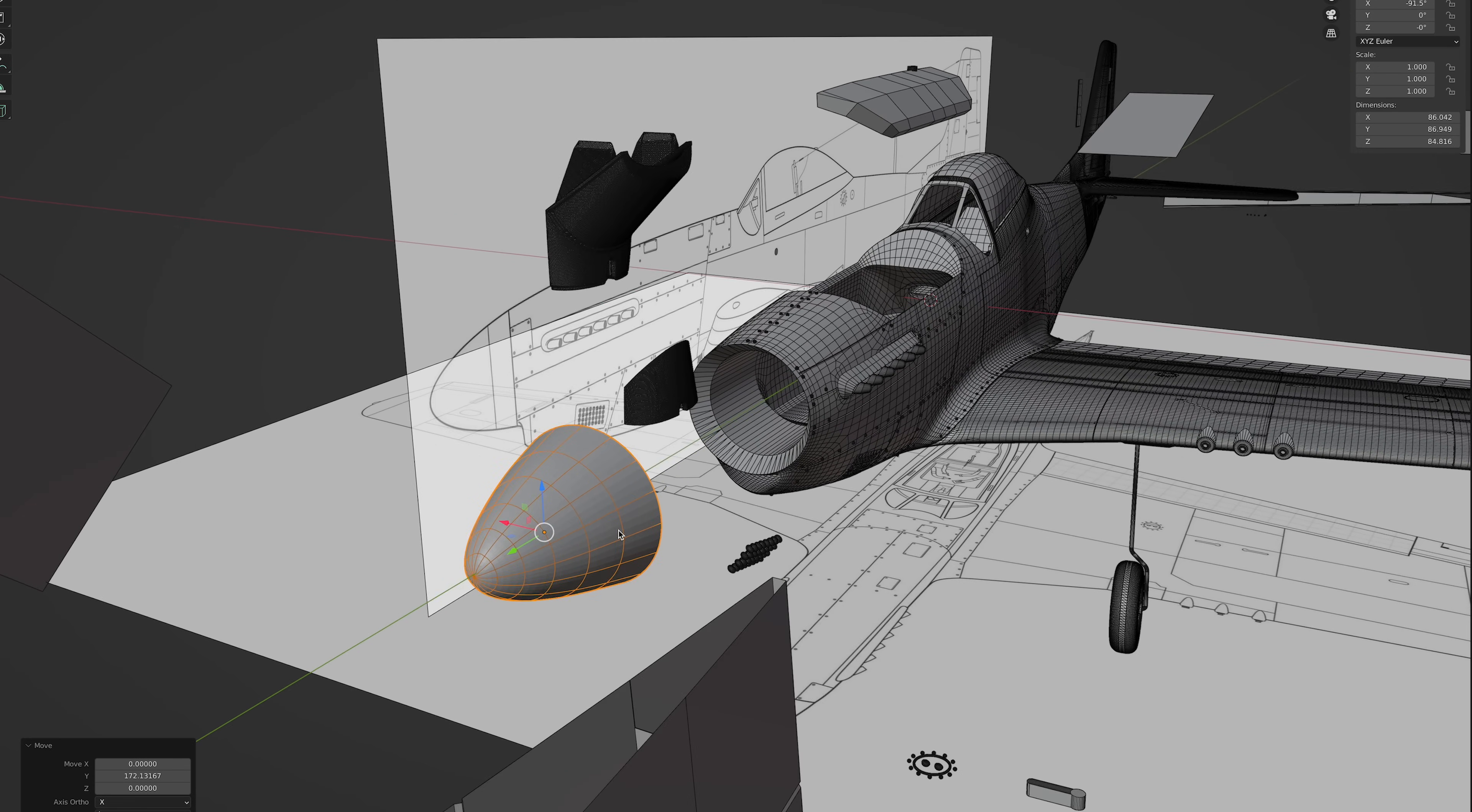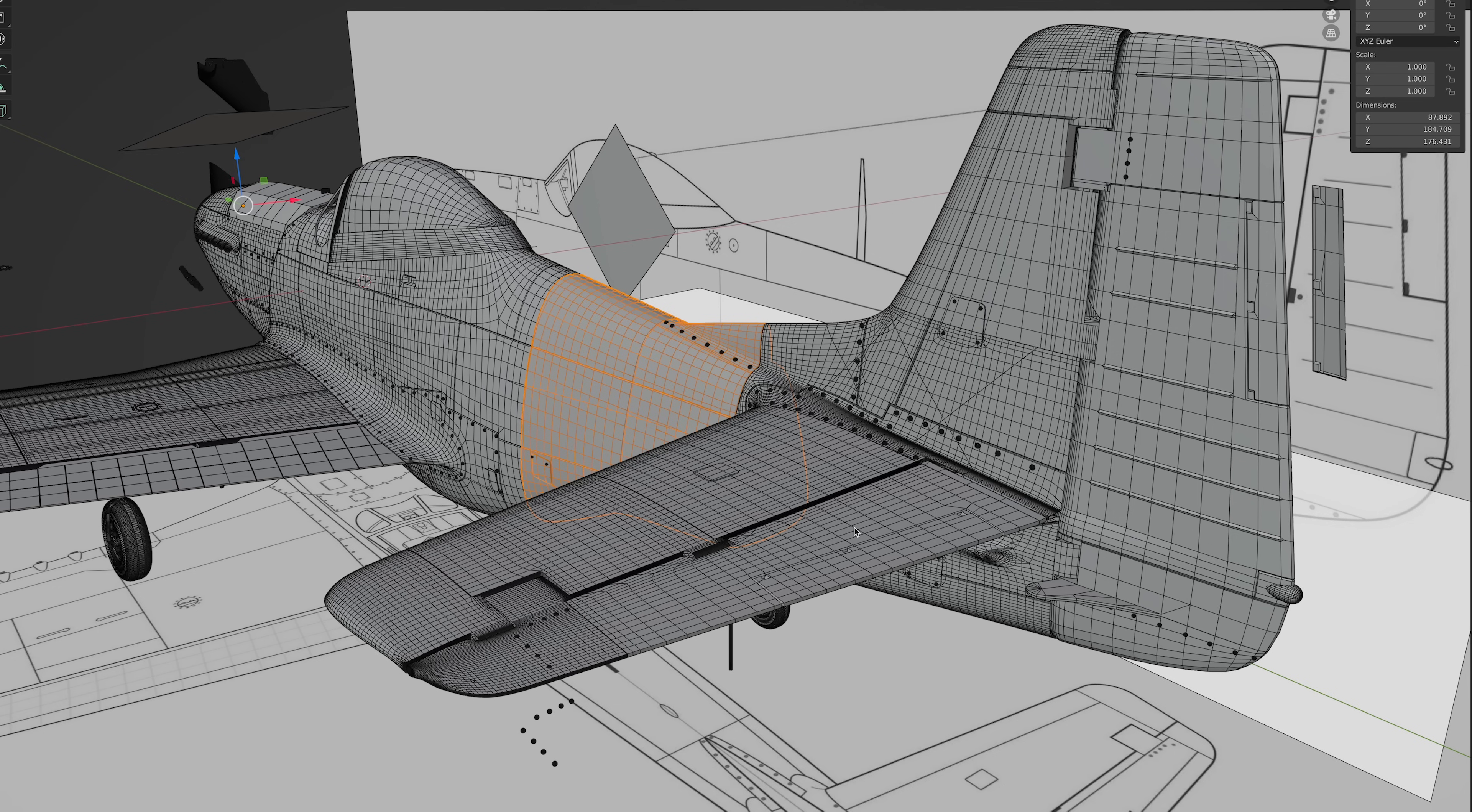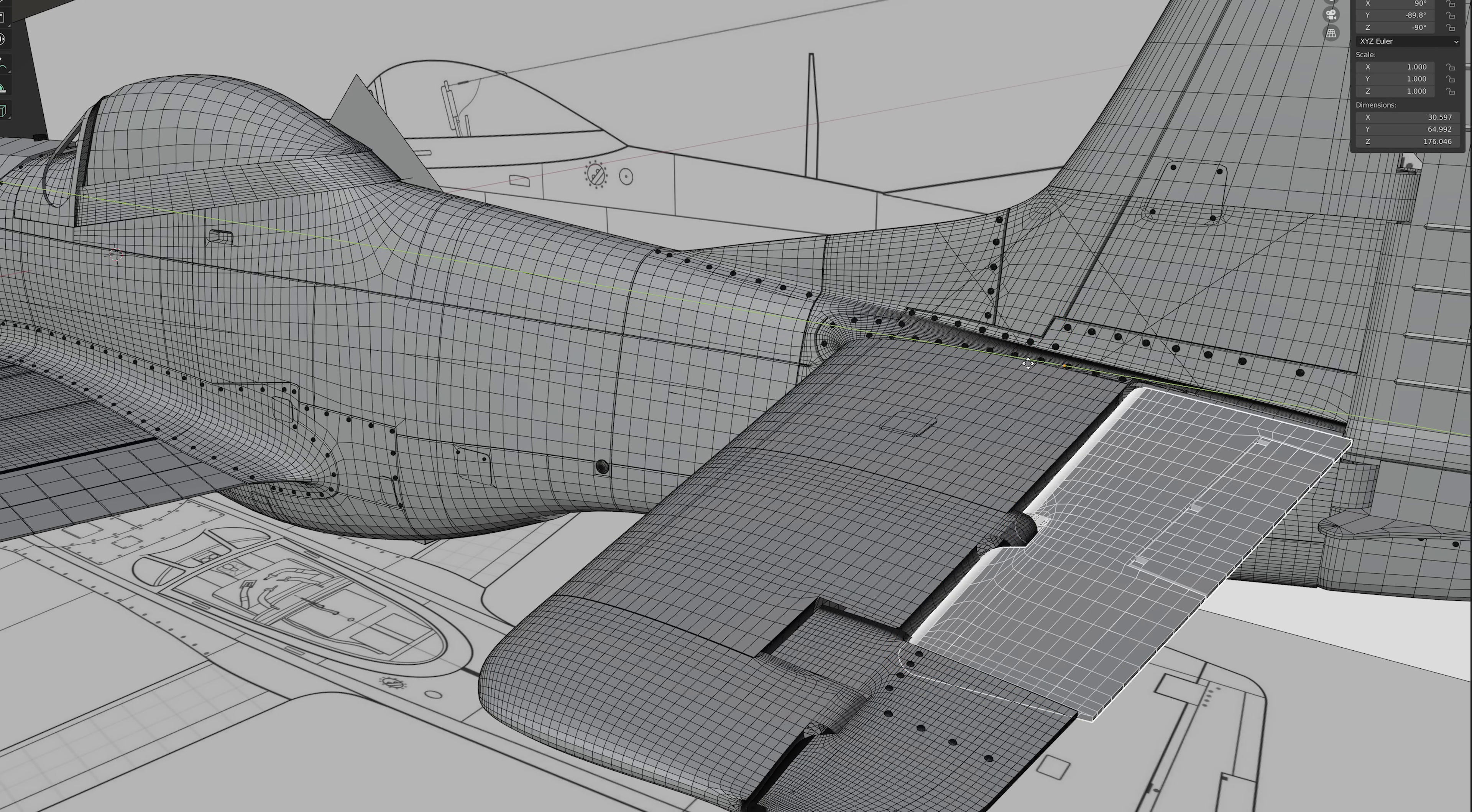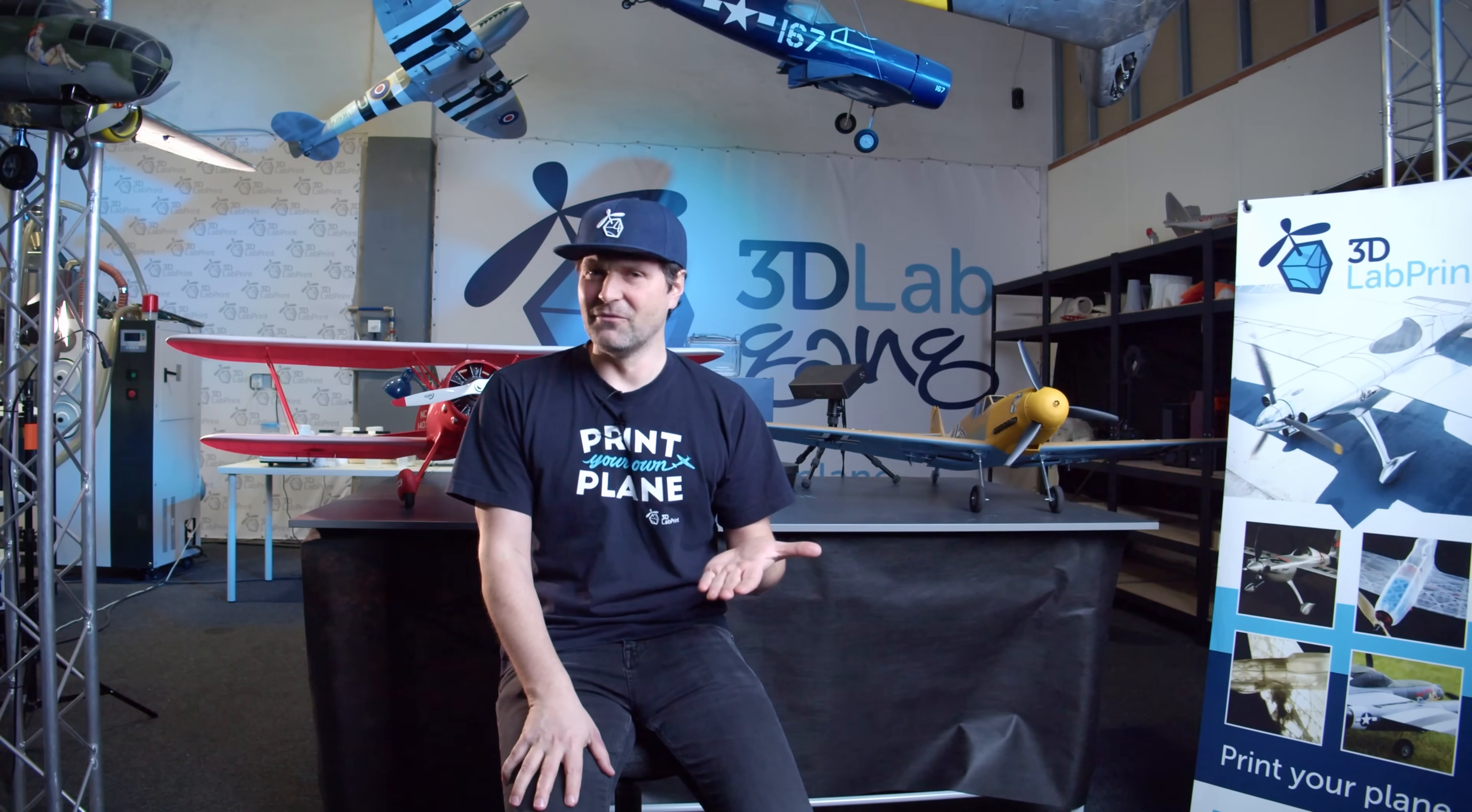Then we 3D print the first prototype, add all the necessary equipment, and we fly it. Usually it turns out that it still needs a bit of tweaking. For example, it's not stable or it's not easy to land, or perhaps it has a tendency to stall even at higher speeds.